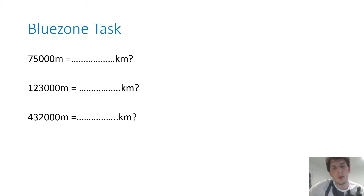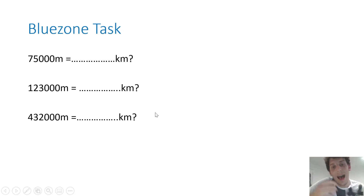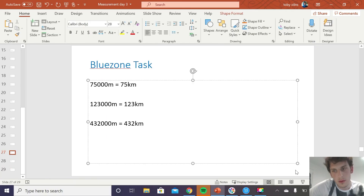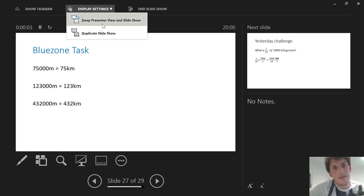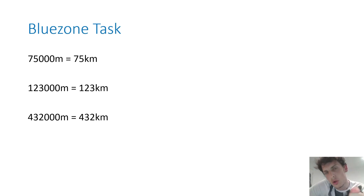Now I should just have the blue zone people with me. Blue zone, you are doing exactly the same task. Here you have different amounts of meters — I want you to tell me how many kilometers there are. How many kilometers in 75,000 meters? How many kilometers in 123,000 meters? How many kilometers in 432,000 meters? Please pause the video, complete that task, and then press play. In 75,000 meters, we have 75 kilometers. In 123,000 meters, we have 123 kilometers. And in 432,000 meters, we have 432 kilometers. If you didn't quite get that right, watch the video again or send me an email so I can give you some support.